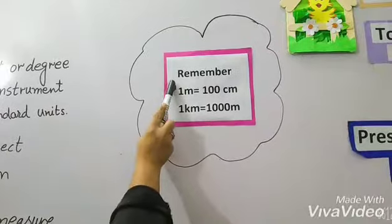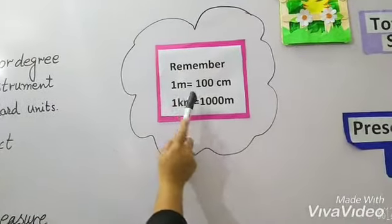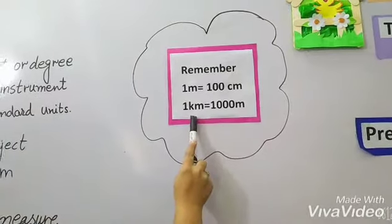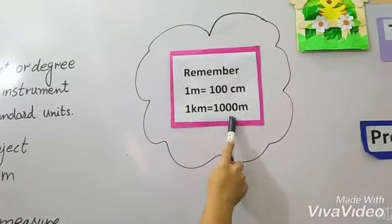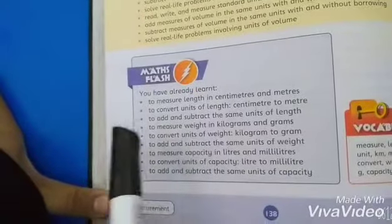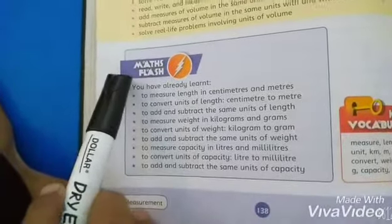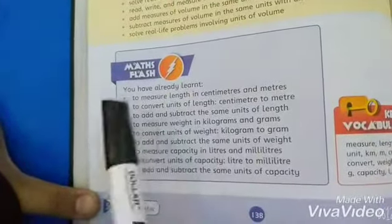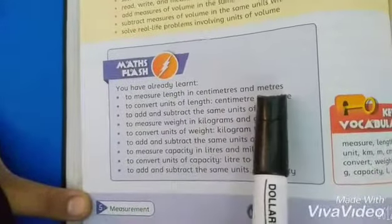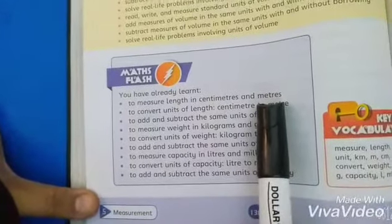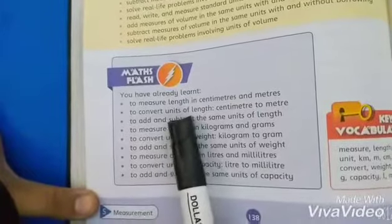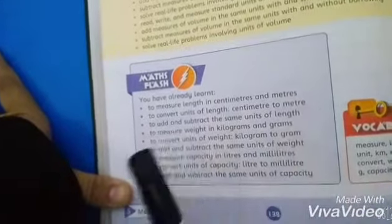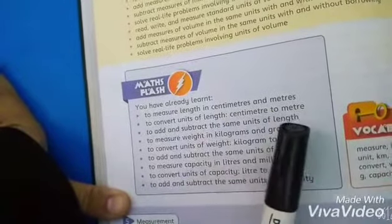Remember that 1 meter is 100 cm and 1 km is 1000 meters. In the book, you have already learnt how to measure length in centimeters and meters, and we can convert length between centimeters and meters.